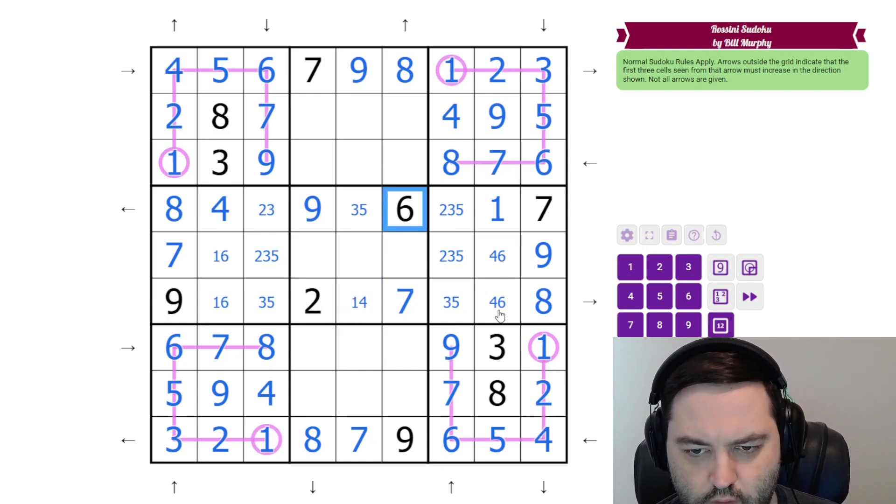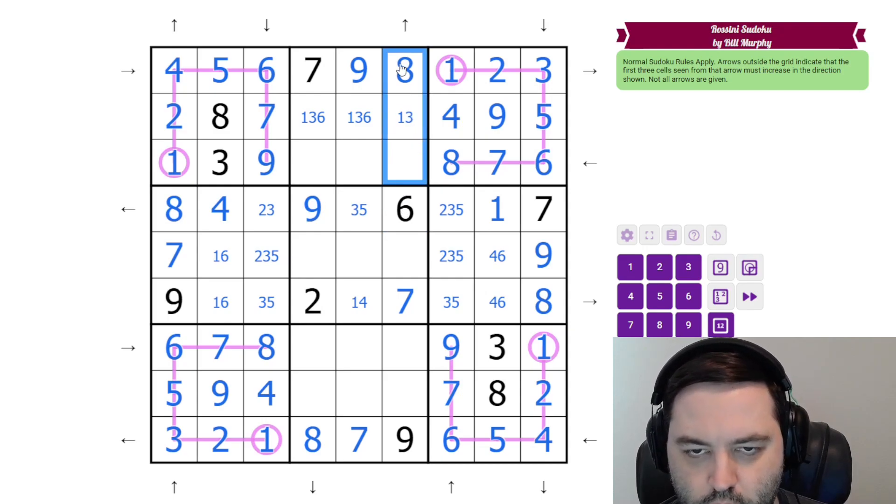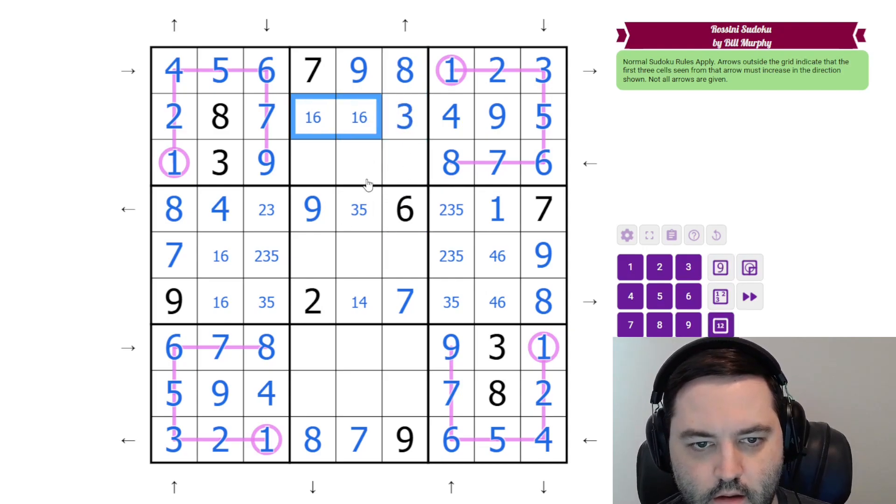Here we need a seven in the row, and there's a seven there. And this is one or four. It's not six. And we have a three, five pair. Let's come up here. These are one, three, and six. This is not six in the column, and it's not one because, again, we're increasing going that way. These are two, four, five.